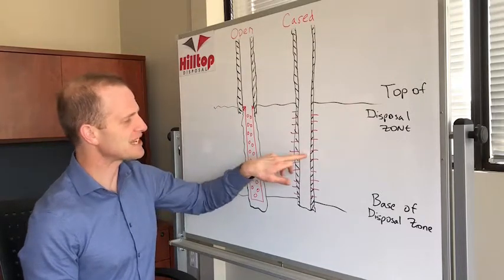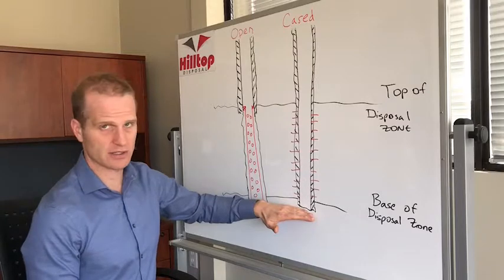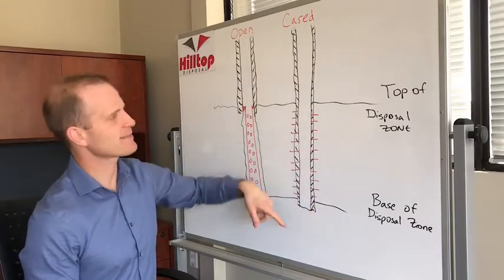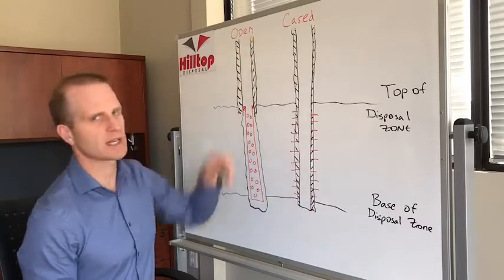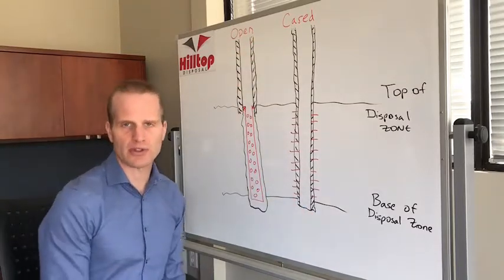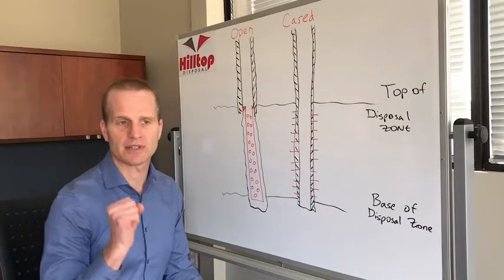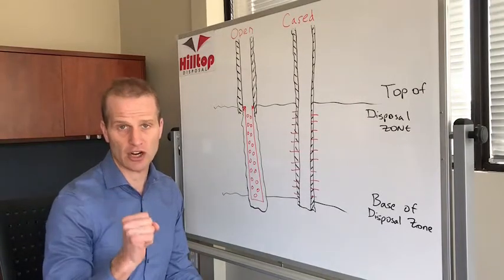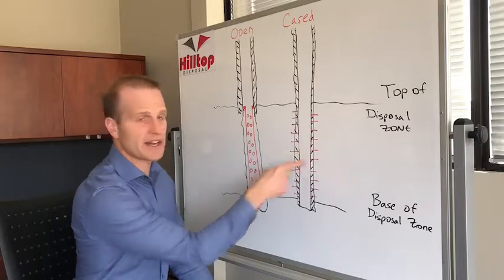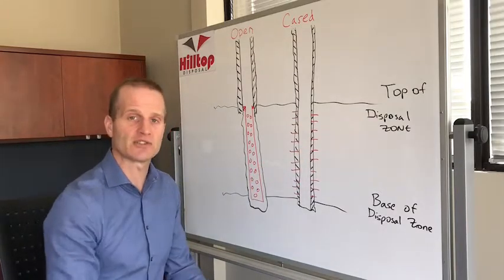In a cased hole completion you drill right down to the bottom of your disposal zone, run casing and cement the whole thing into place, and then afterwards perforate through the casing. Perforations are shaped explosive charges that blow holes through the side of your casing, through your cement, and into your formation.